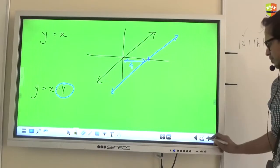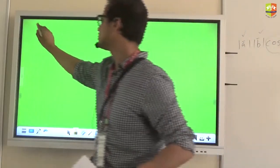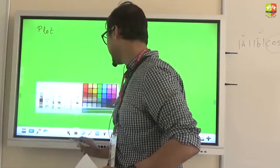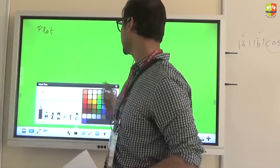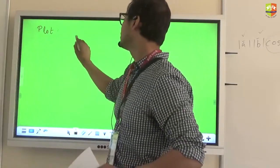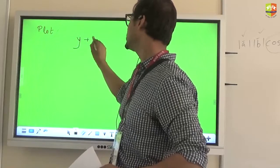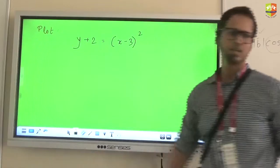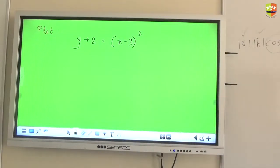Question for all of you: plot, very carefully, don't make a mistake about it. Plot y plus 2 equals x minus 3 whole square. I am not worried about the shape of it, of course the shape will be a parabola. I am worried about the coordinate of the vertex, so please mention the vertex coordinate in the graph that you plot.